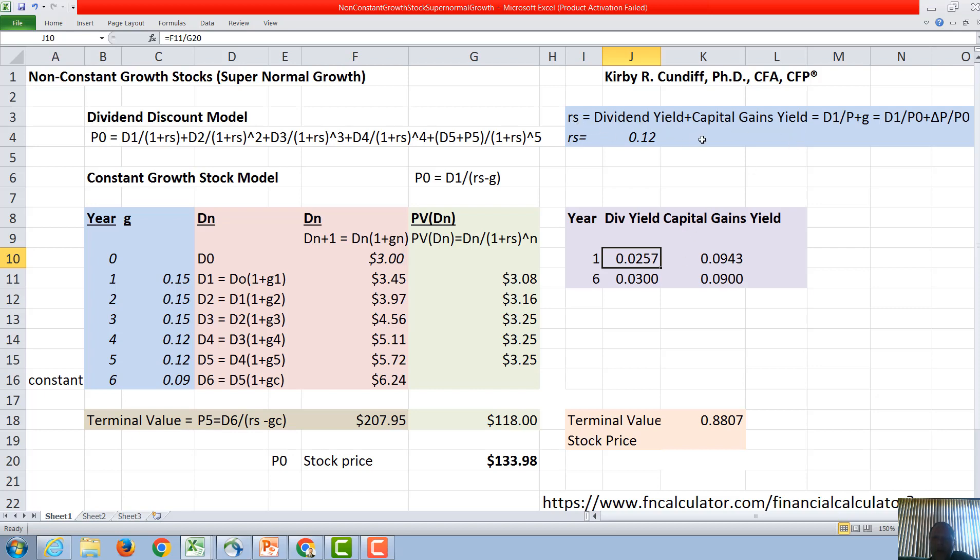What we know from our equation up here that rs has to equal the dividend yield plus the capital gains yield. So to get the capital gains yield we can just take 0.12 minus 0.0257 and get in year one the capital gains yield is 9.43 percent.